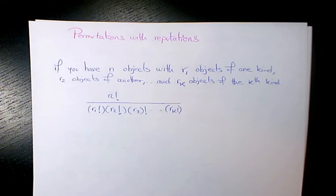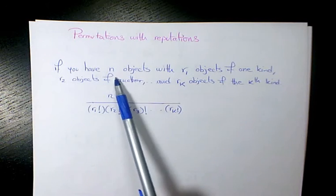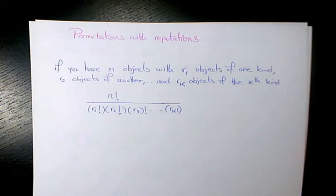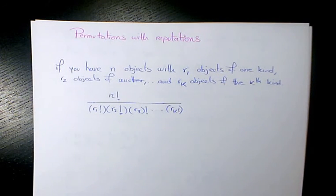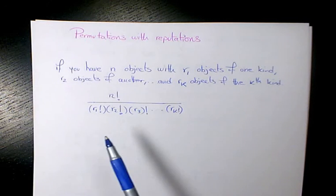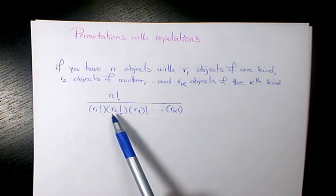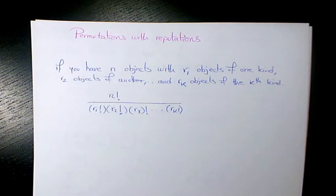So in general, for questions like this when we are dealing with permutations with repetition, we have: if you have n objects (in this case we had n letters) with r1 objects of one kind, r2 objects of another, and rk objects of the kth kind, we can calculate the number of ways or number of arrangements like this: n factorial divided by r1 factorial times r2 factorial all the way to rk factorial. That's how we solve this permutation question with repetition.